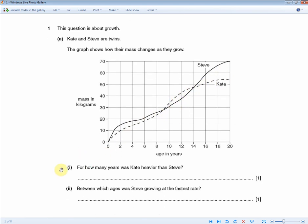So for one mark, the first question is asking, for how many years was Kate heavier than Steve? So the first thing to do is to locate which part of the graph to actually look at. Where the graph shows that Kate is heavier than Steve is here where the dotted line is higher up than the solid line. So now what you need to look at is how many years was the dotted line higher up than the solid line. And of course that's one square, two squares, and half a square.